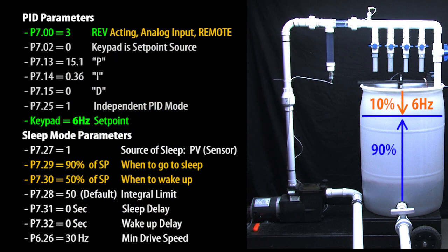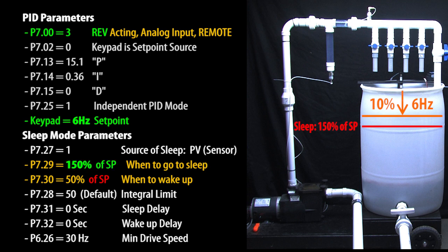We also need to change our wake and sleep set points to match the reverse acting sensor. In the previous video we found the sleep and wake levels are relative to the set point. So, since the set point is at 10% and suppose I want to shut the motor down at another 50% of that, then my sleep level is 150% of the set point, which would be 9 Hz.